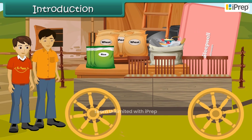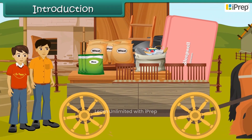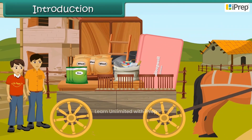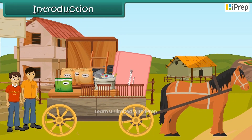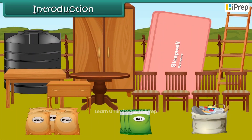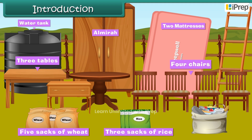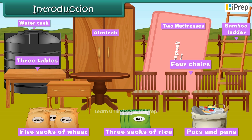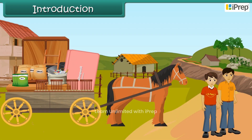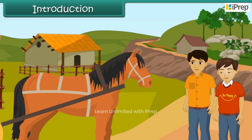Sam and Manu were shifting house. They loaded all their things on a horse cart. There were many things like a water tank, five sacks of wheat, three tables and an almirah, four chairs, two mattresses, three sacks of rice, a bamboo ladder, and pots and pans. When they were ready to move, the horse refused to start. They wondered why.